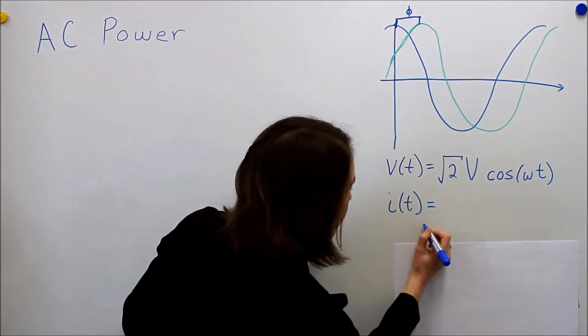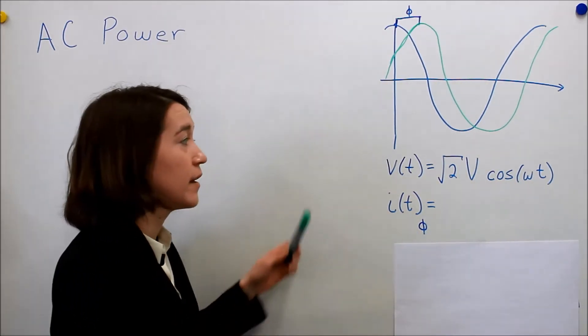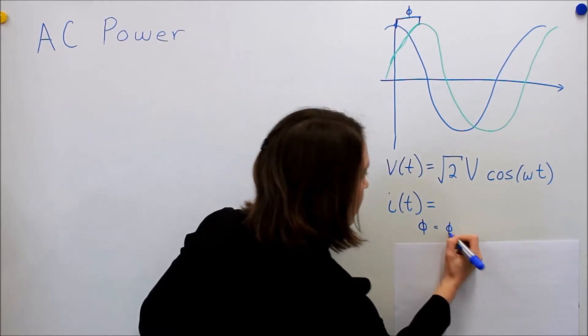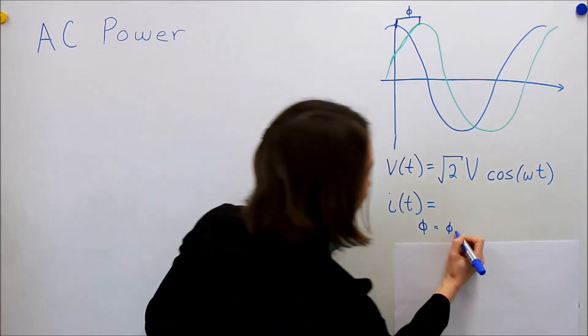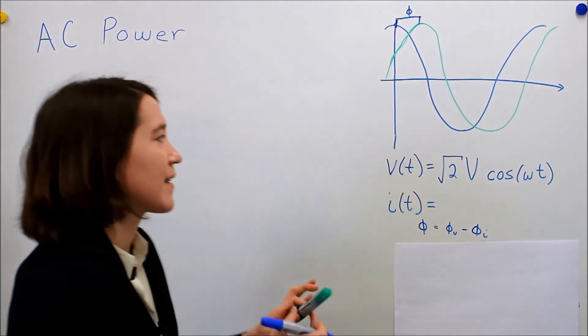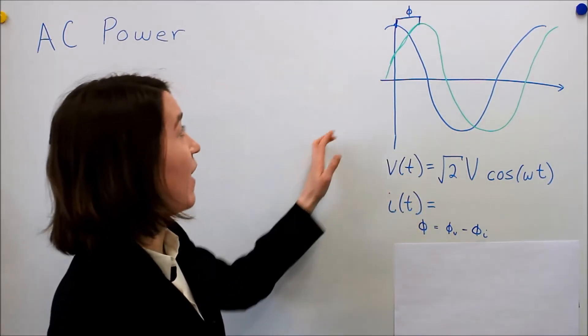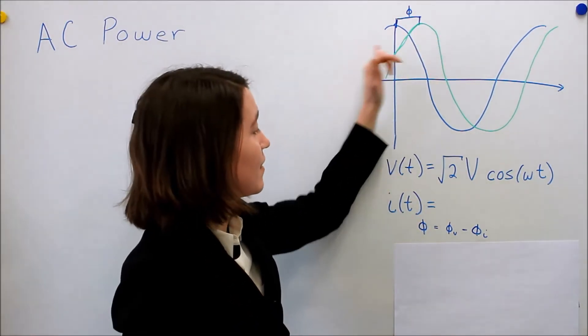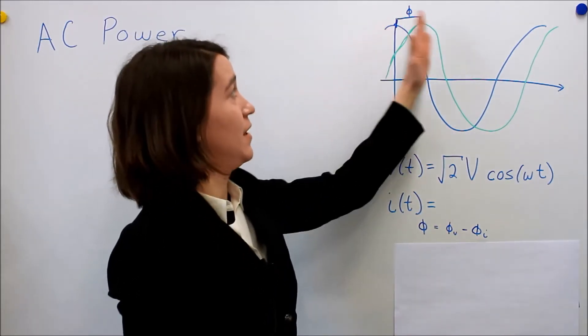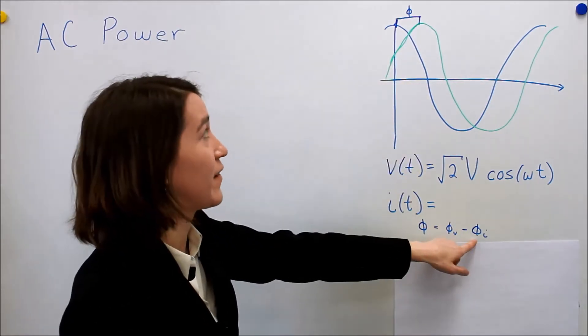And I want to define here, phi is the phase shift between the voltage and the current. And it's defined by the shift, phase shift of voltage minus the phase shift of the current. So in this case, our phase shift for the voltage is zero. And then we have, in this case, actually this phase shift would be a little bit negative. So it's because it's a little bit ahead here. So if you do the math for all this, you'll see that this value would have to be negative.